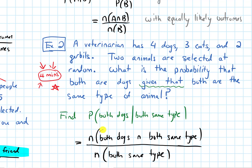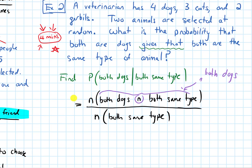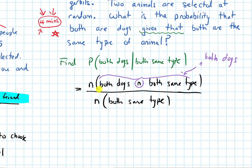The numerator here — remember the intersection means the word 'and' — so it's saying both animals are dogs and they are both the same type of animal. That's a bit redundant to say, so this simply means that both are dogs.